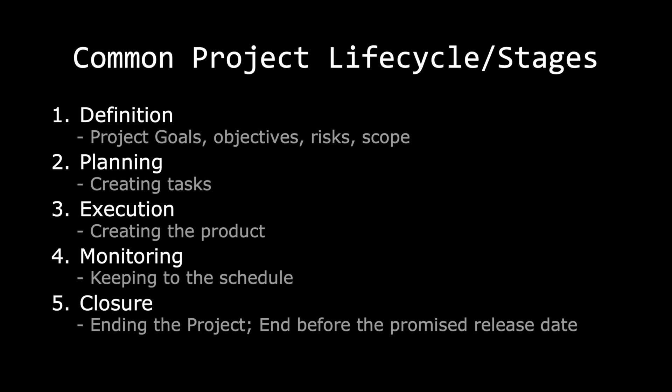In reality, each step has clear and concise goals. In the first step, definition, what you're really trying to do is outline your project goals, your objectives, the risks, and your project scope. After you have defined everything, you move on to creating tasks — you take your project goal and create requirements that you need to fulfill. After you have created your requirements, you move on to the execution step, which is simply creating and testing your product. While execution is happening, you are also monitoring it. If you are ahead of schedule you may want to add more requirements, and if you are behind schedule you may want to remove requirements. Lastly, the project cannot continue forever — at some point you must say the product we have now is good enough and end the project.